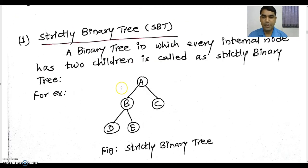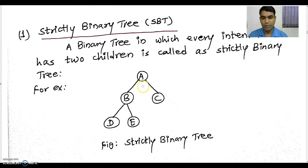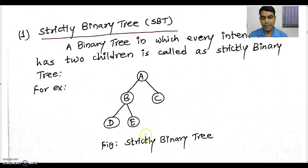What do you mean by a strictly binary tree? A binary tree is called a strictly binary tree if and only if every internal node has 2 children. If you see this diagram, A is the internal node which has 2 children, and B is also an internal node which also has 2 children. That's why this tree can be considered a strictly binary tree.